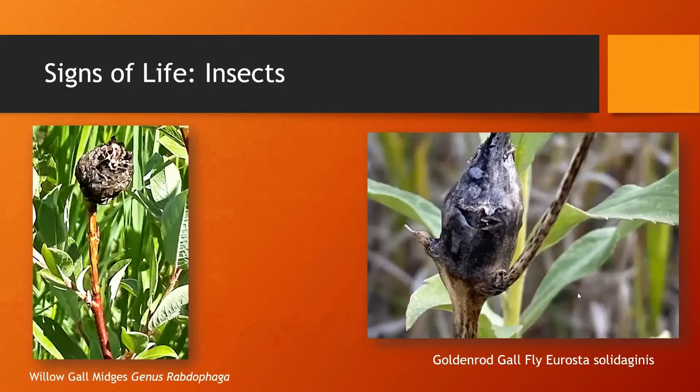There are also other signs of insect life that aren't the insects themselves — you might find chrysalis, cocoons, things like that. Galls are often something you can find, usually made by midges or larvae, something that's irritating the plant. It's usually just an aesthetic thing and doesn't tend to kill the plant or harm it in any way other than how it looks.